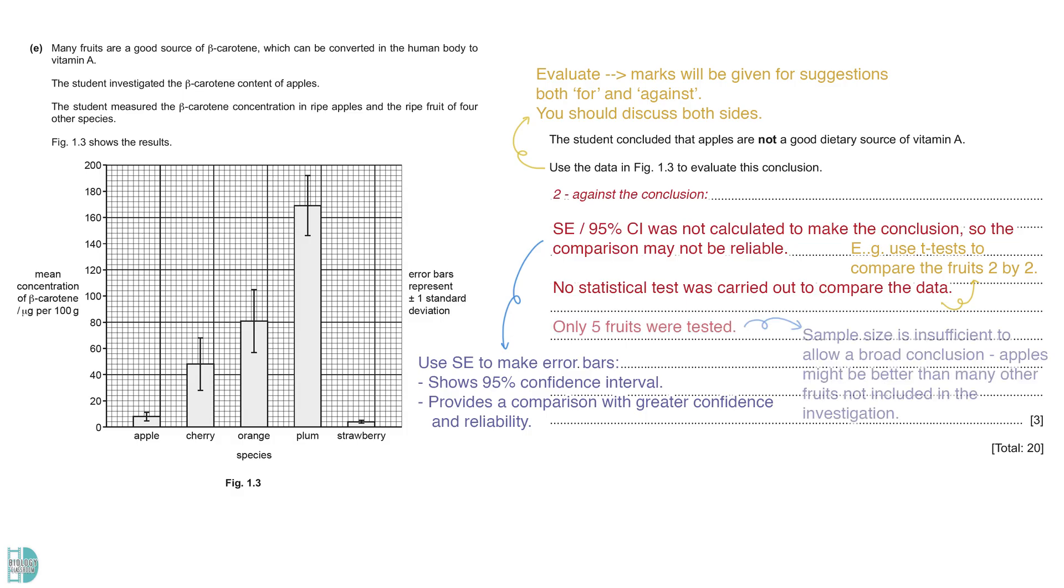Lastly, the sample size is insufficient to allow a broad conclusion like that. Only five fruits were tested. We should not use the data to conclude that apples are not a good source of dietary vitamin A, as they might be better than many other fruits not included in the investigation.